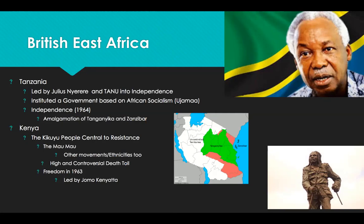The Mau Mau struggle was punctuated by rural violence, manifesting through labor strikes, burning of buildings, and other forms of sabotage. The violence increased in the early 1950s with attacks on white settlers as well as African collaborators.